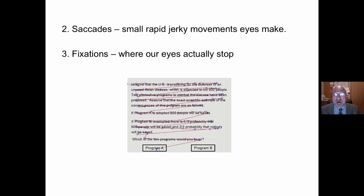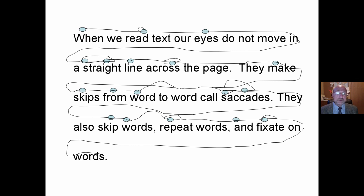Fixations are where our eyes actually stop. When we read text, our eyes do not move in a straight line across the page. Those little dots are called fixations. They make skips from word to word called saccades. They also skip words, repeat words, and fixate on them.